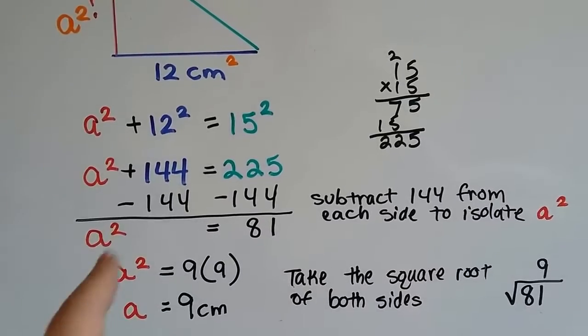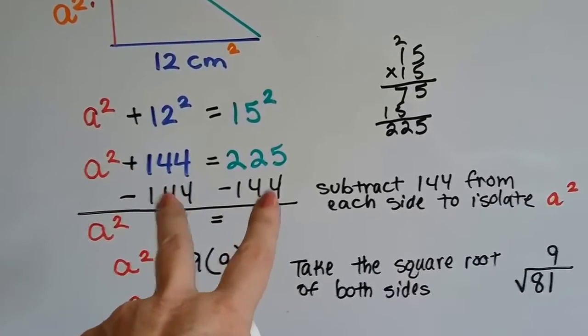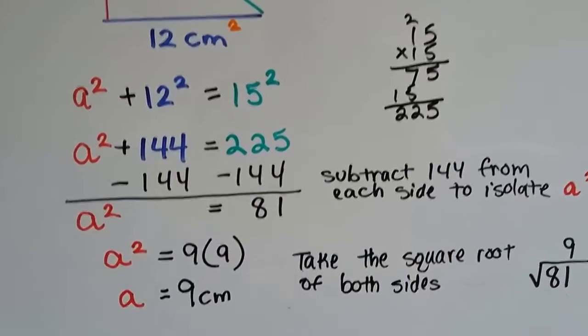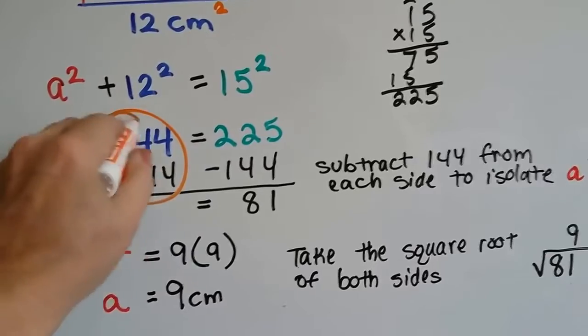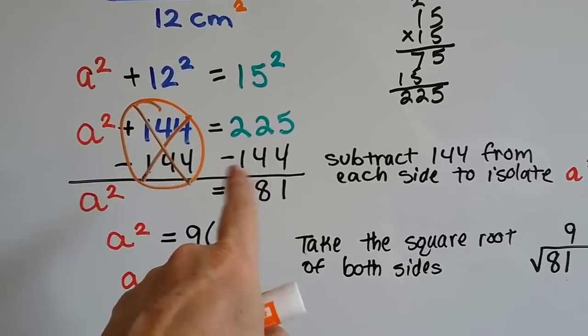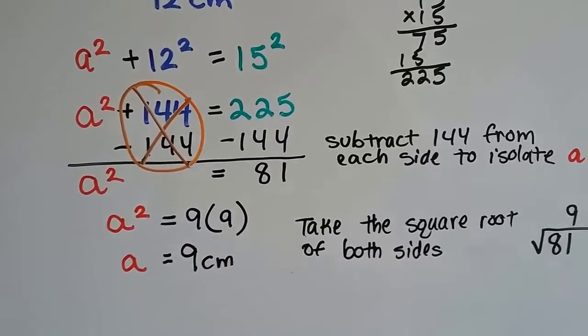We can do this algebraically. Because this is a² + 144, we can subtract 144 from each side. That'll isolate a² to one side, and this will give us our zero pair and eliminate that. 225 minus 144 is 81. We know a² = 81.